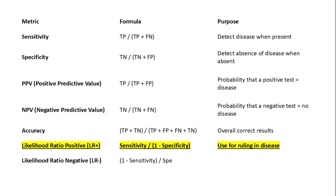Negative predictive value, or NPV, tells us the likelihood that a negative test truly means no disease. The formula is true negatives over the sum of true negatives and false negatives.